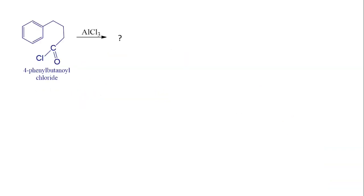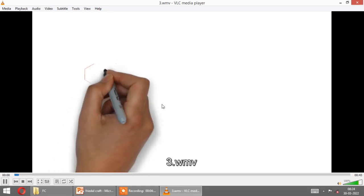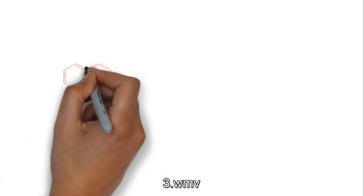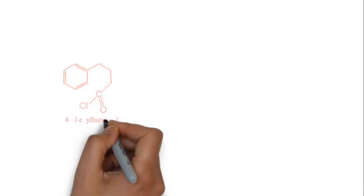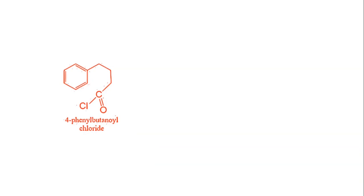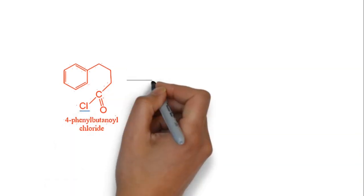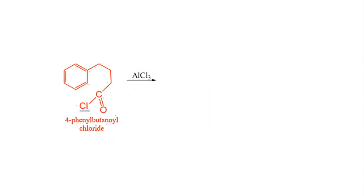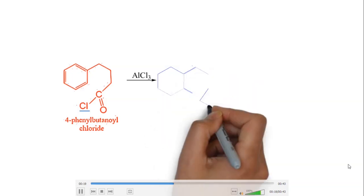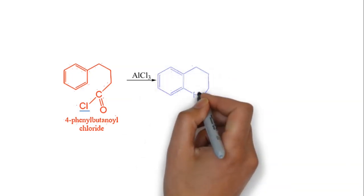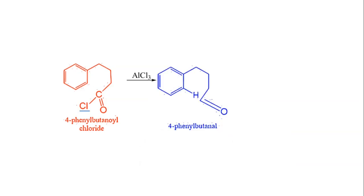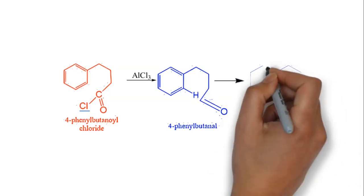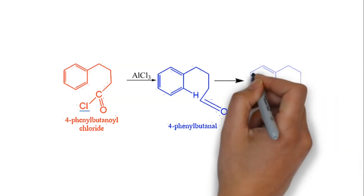Now let us take 4-phenylbutanyl chloride. In the presence of AlCl3, what will be the product? Let us take the reactant 4-phenylbutanyl chloride and remove Cl⁻ in the presence of AlCl3. The Friedel-Crafts reaction gives an intermediate, 4-phenylbutanal, which on intramolecular cyclization gives tetralone.